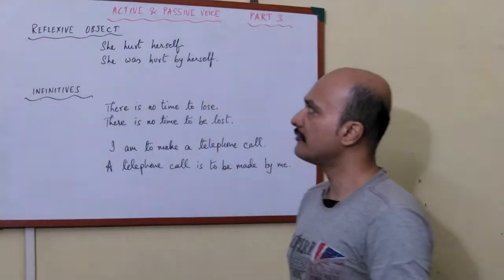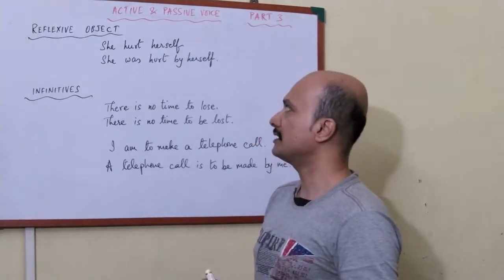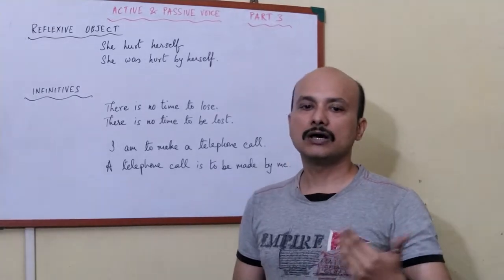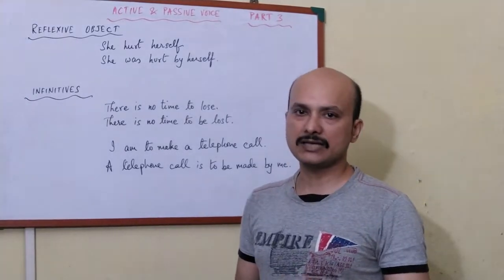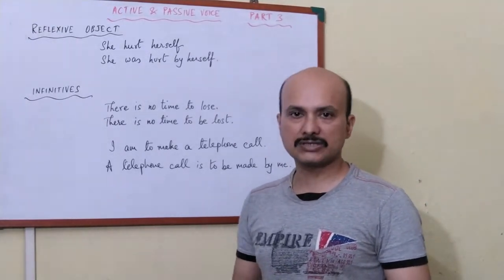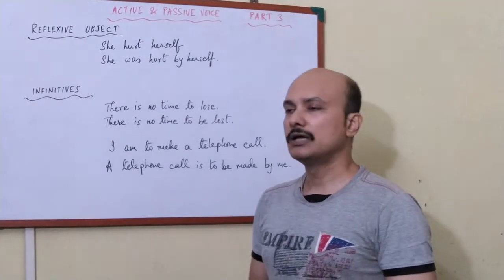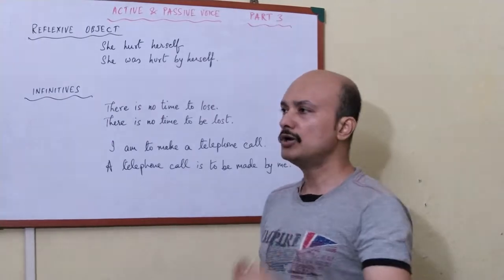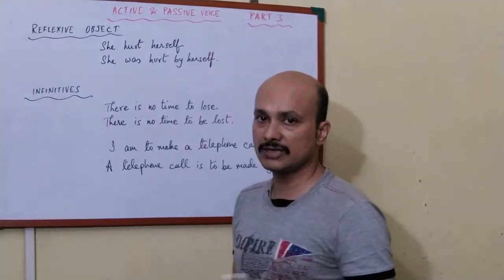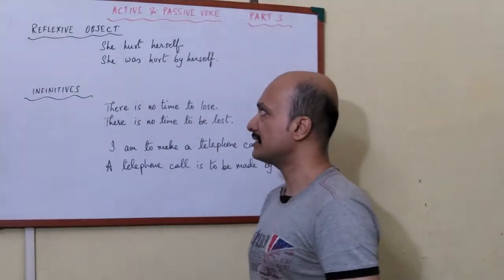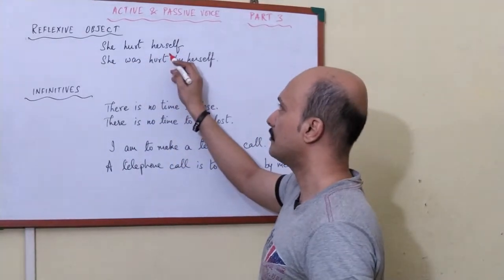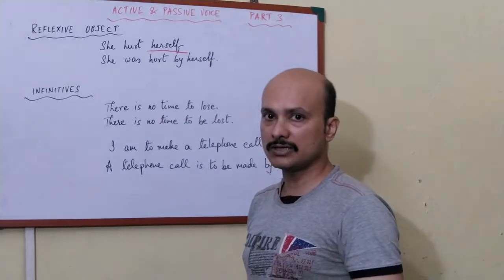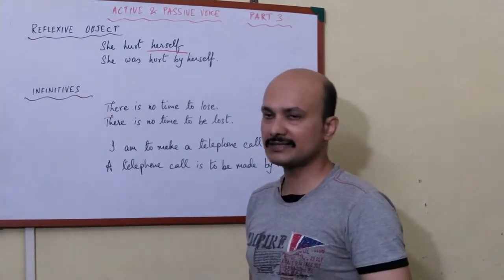Number 1: reflexive objects. There are words like himself, themselves, ourselves — these are reflexive and emphatic words. When these words appear in sentences, the question is how do we change such sentences? See here you have the sentence: she heard herself. 'Herself' is your reflexive word.